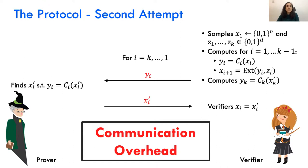However, this second attempt has a communication overhead: for k iterations, the parties exchange y_i and x_i' of sizes m and n respectively, giving trivial communication complexity. We want better than that.